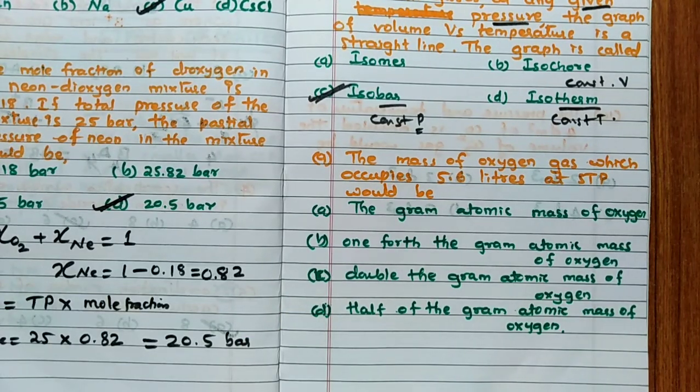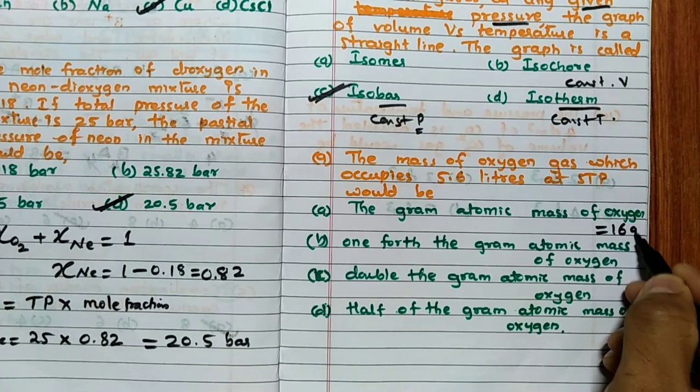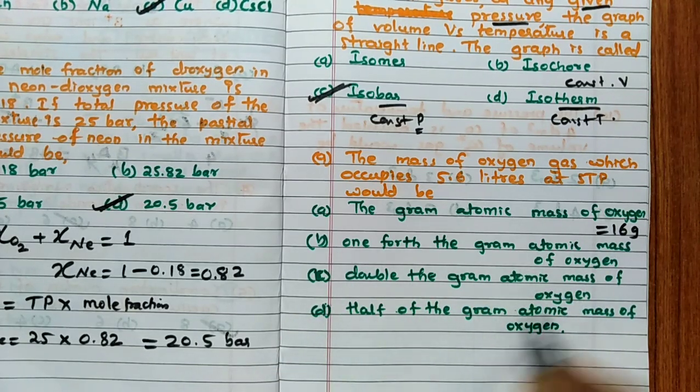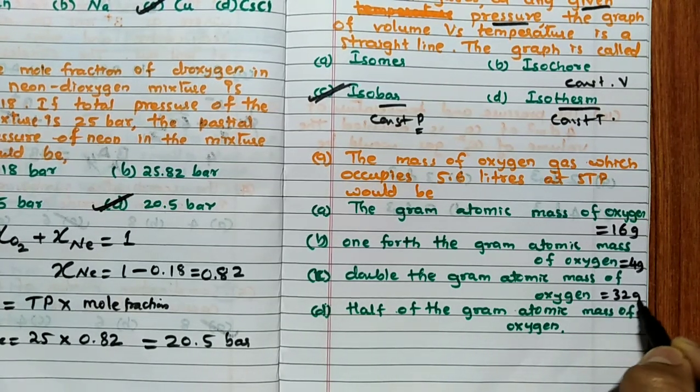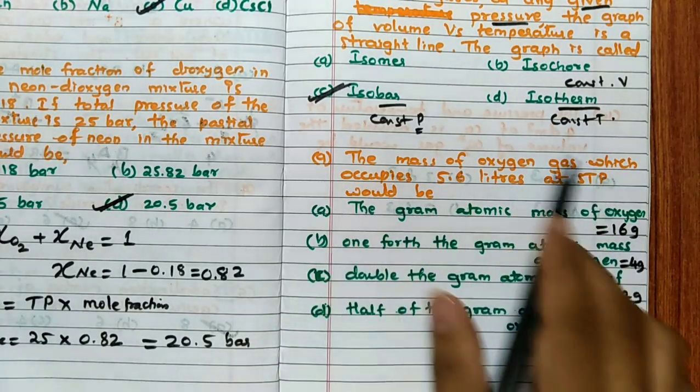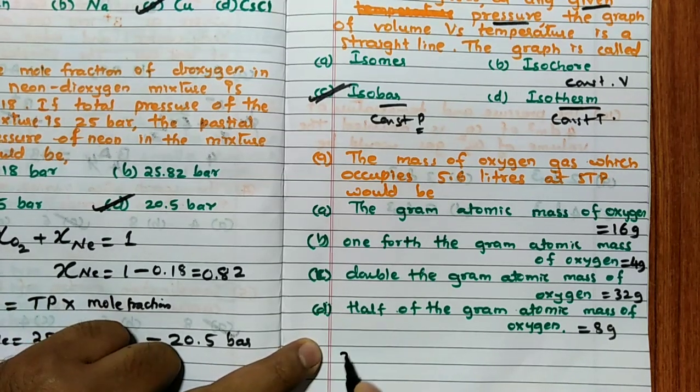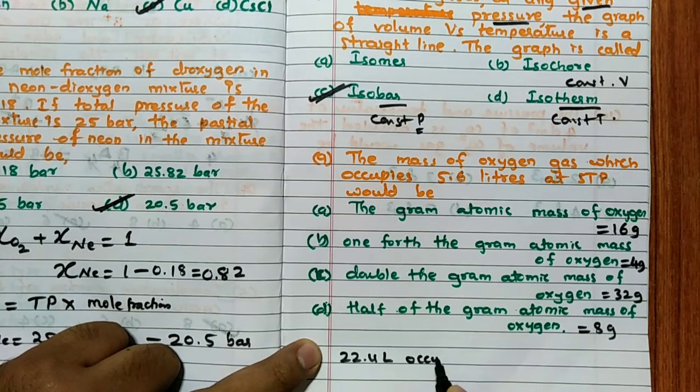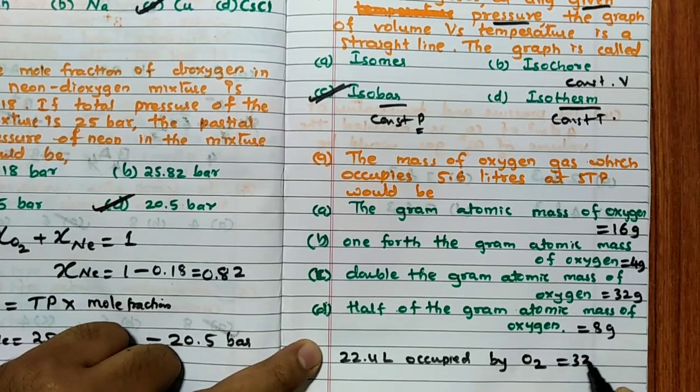Ninth question - the mass of oxygen gas which occupies 5.6 liters at STP would be: gram atomic mass of oxygen is equal to 16 gram. We know that one-fourth of the gram atomic mass of oxygen, which means this should be equal to 4 gram. Double the gram atomic oxygen, so 32 gram. Half of the gram atomic mass of the oxygen is equal to 8 gram. Now you will see this particular mass will equal to how many grams.